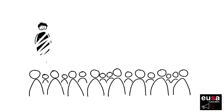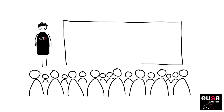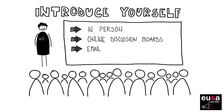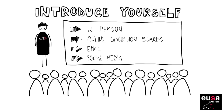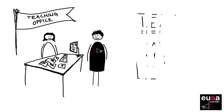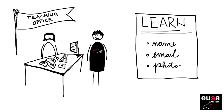The first important aspect of working with students is that everyone you're representing knows who you are and what your role is. You can introduce yourself in person, online, in discussion boards for your course, or by emailing all the students you're representing. Use social media — for example, why not set up a Facebook group and share USA's video 'What Do Class Reps Do?' so that all students know what your role is. Ask staff to include your name, email and photo in the contacts area on Learn or your virtual learning environment.